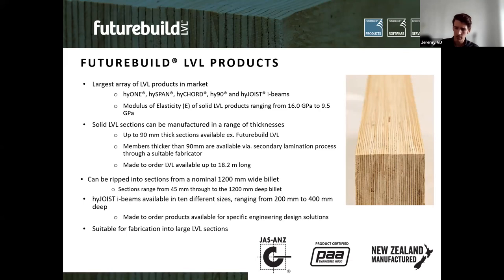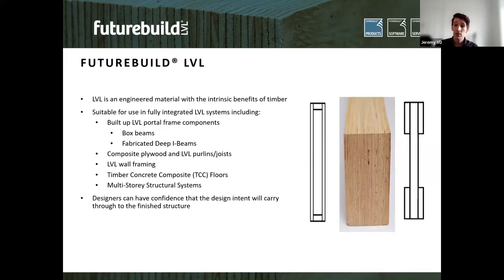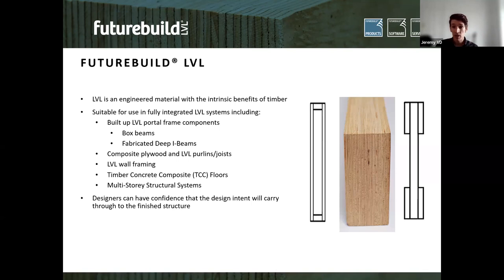For larger runs we can make to order — one design example has 450mm deep I-beams. LVL is well-suited to built-up sections: you can have a solid piece in the middle, a box beam with webs and flanges, or a fabricated deep I-beam. The design examples will cover all three types and where they're best used. LVL is also used in wall framing, residential applications, timber-concrete composite floors, and multi-storey structural systems.